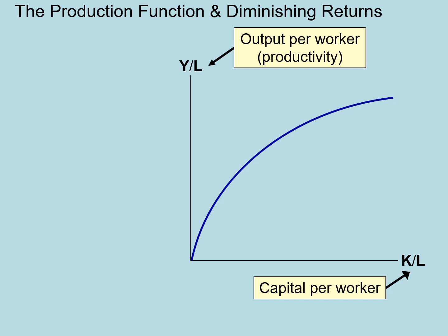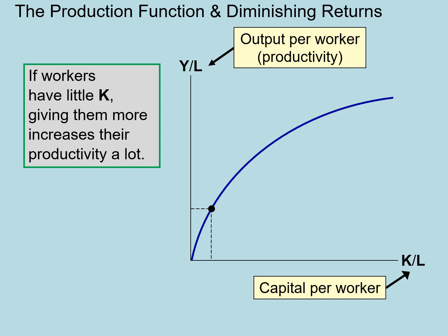Diminishing marginal returns simply means that as you increase one input, in this case capital, while holding all other inputs constant, in this case labor, there will be an increase in output per worker or productivity, but that increase is ever smaller and smaller. As an example, let's suppose that workers have a small level of capital, and we give them an additional 10 units of capital — their productivity will increase by quite a bit.